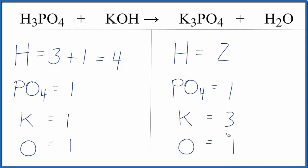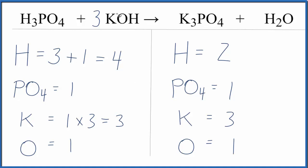Let's start by fixing the potassiums — it's usually easier to leave the hydrogens and oxygens to last. I have three potassiums, so I'll put a coefficient of three in front of the KOH. That means one times three, which balances the potassiums, but I need to update the O and the H. So now I have one times three for the oxygen.